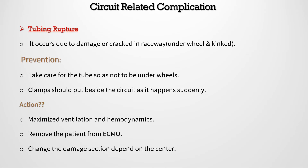Another circuit-related complication — serious but rare — is tube rupture. It can occur due to damage, a crack in the tubing, the tube being placed under a wheel, or kinking. To prevent this, ensure tubes are not placed under wheels and that clamps are positioned inside the circuit, as this complication happens suddenly. If tube rupture occurs, maximize ventilation and hemodynamic support, remove the patient from ECMO, and change the damaged section or the entire circuit.